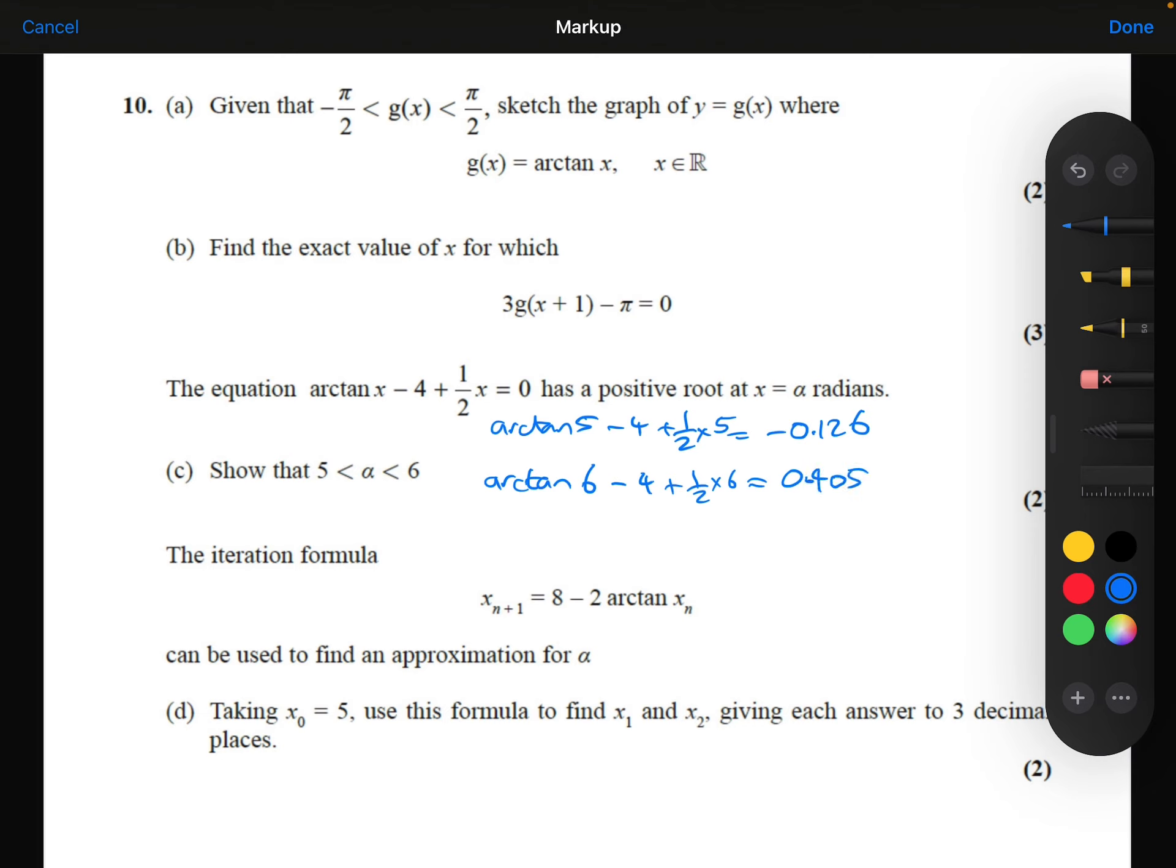When we type that into our calculator, we get positive 0.405. So crucially, there is a sign change. So I'm now going to write the sentence that we usually write. So we say, sign change in the continuous function. Therefore, there must be a root in the interval 5 to 6.